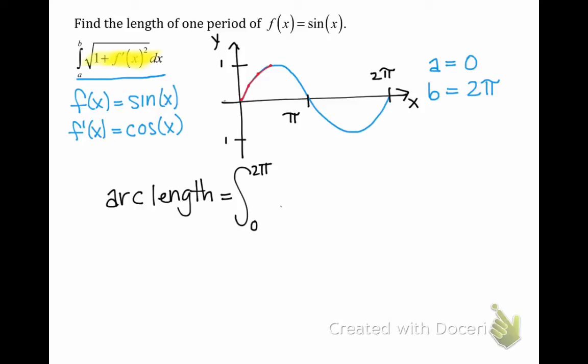The integrand is the square root of 1 plus the square of our derivative cosine of x. So we have cosine squared of x, and then of course we have dx at the end because we're integrating with respect to x.